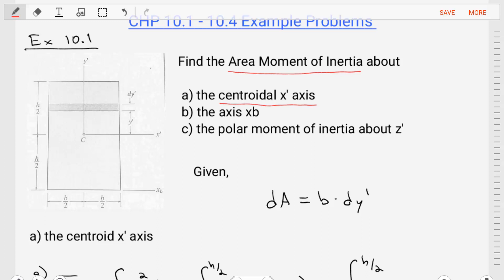In this example we're asked to find the area moment of inertia about A, the centroidal x' axis, B, the axis xb, and C, to find the polar moment of inertia about z'.